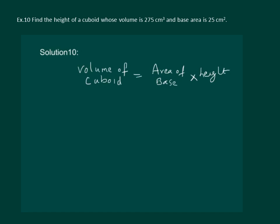It is given that volume is 275 cubic centimeters and area of base is equal to 25 centimeters square. So let us substitute: we have 275 equal to 25 into height. On solving we will get 275 divided by 25 is equal to height.